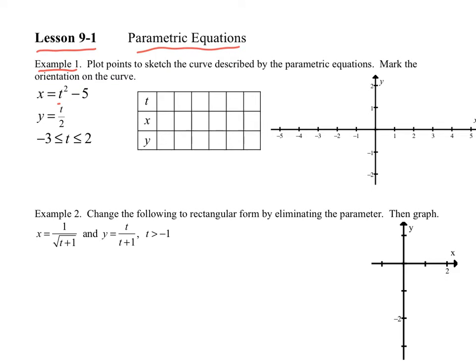So we have this t variable that we're dealing with. A lot of times you see t or you see theta. Now what happens is that each x and y is going to be based individually upon that t value, and so you can think about time ticking off. So if we want to plot this one and sketch the graph of x equal to t squared minus 5, y equal to t over 2, I need to look at this interval — going from negative 3 all the way up to 2.